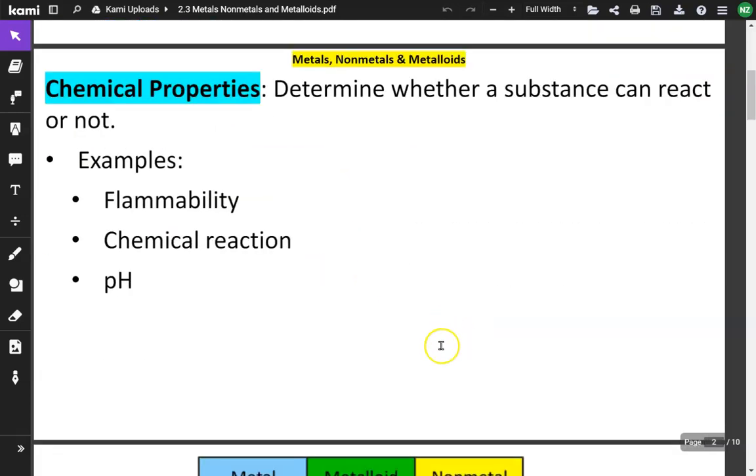Chemical properties, on the other hand, determine whether a chemical substance can react or not, like flammability, whether or not it causes a chemical reaction, pH.